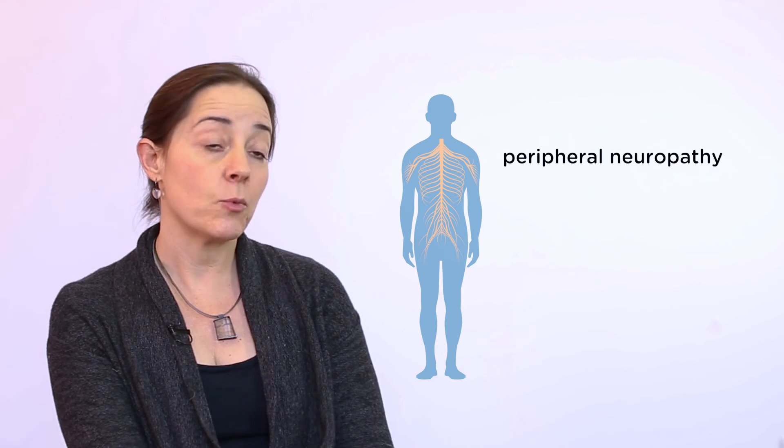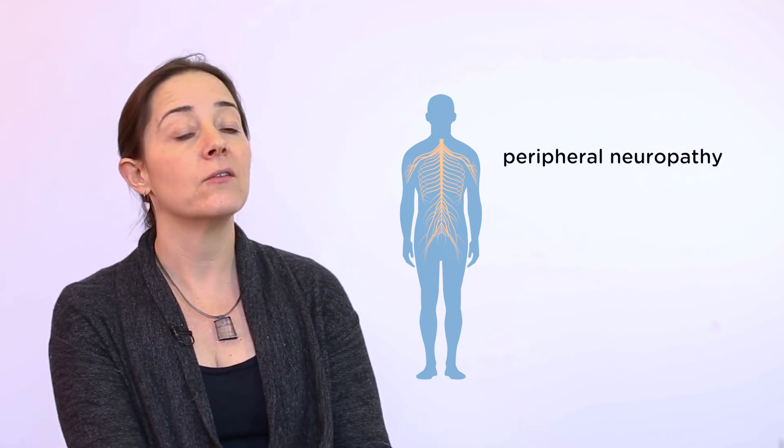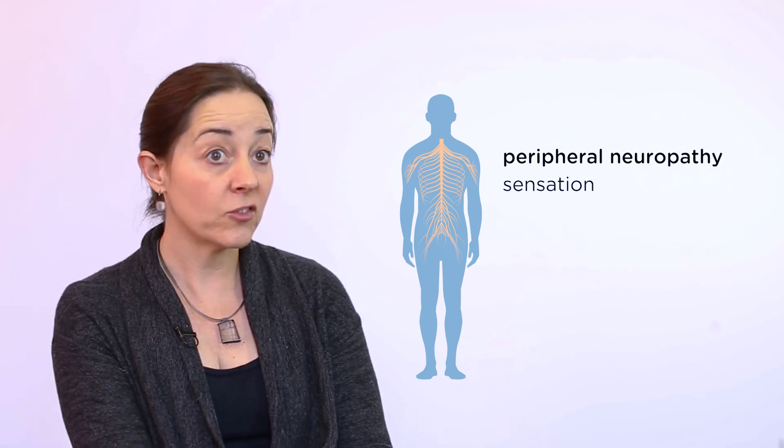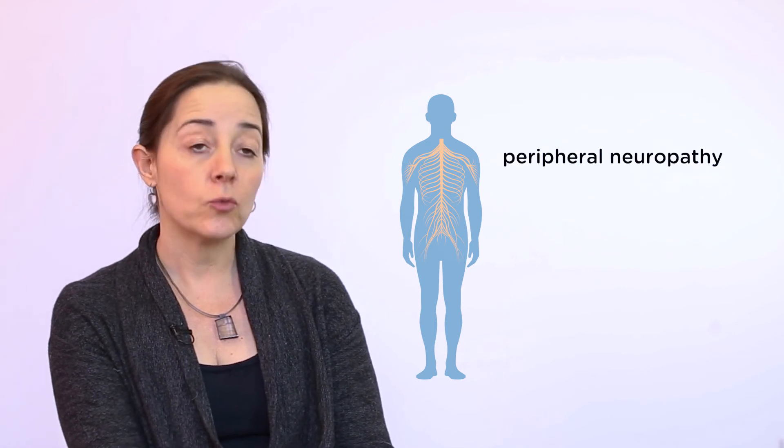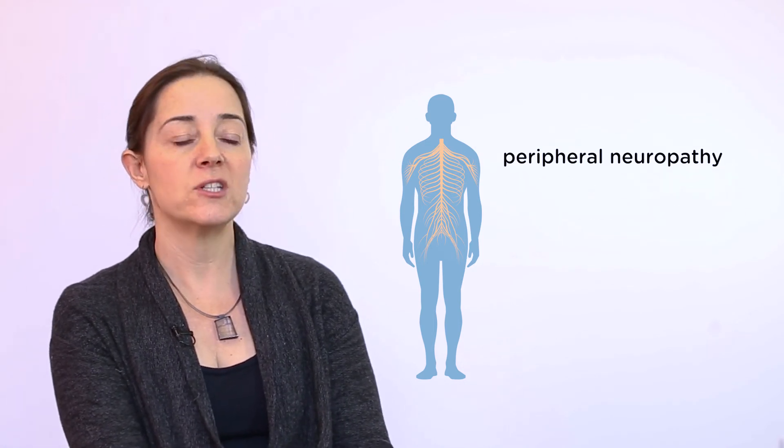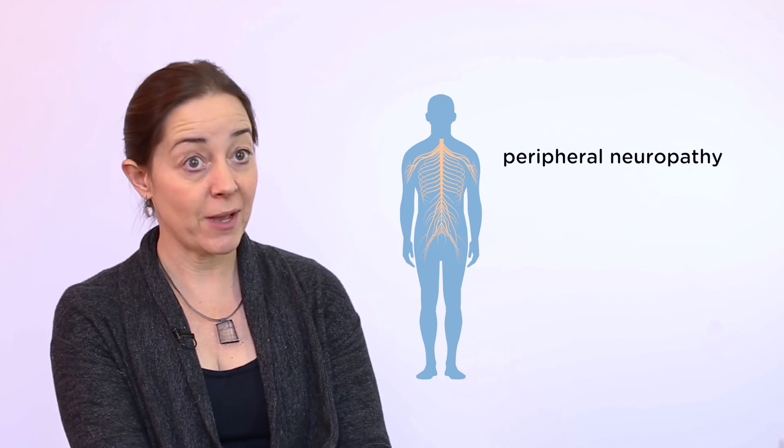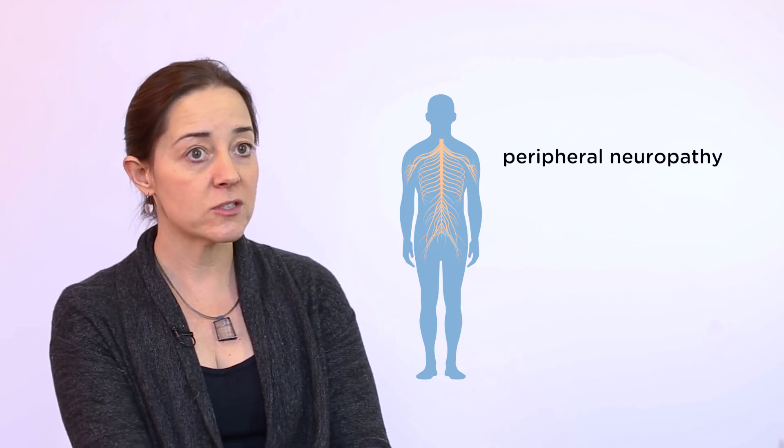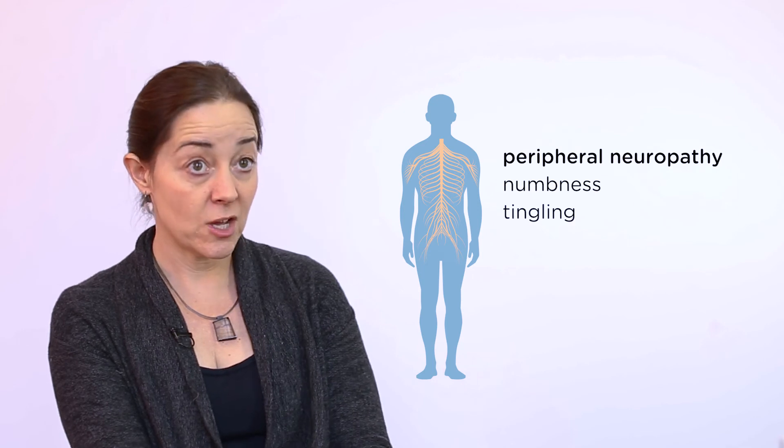The peripheral nerves are what we much more think of as being nerve function. Those are the nerves that control sensation and also muscle movement. Involvement in that can cause what's called a glove and stocking neuropathy, which is when the long nerves are damaged just by having a little bit of amyloid along their course. Then you can get numbness and tingling in the fingertips and toes.